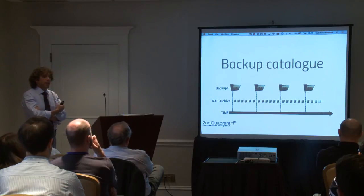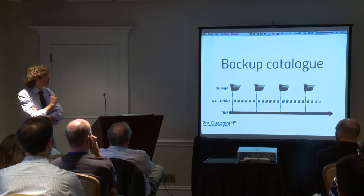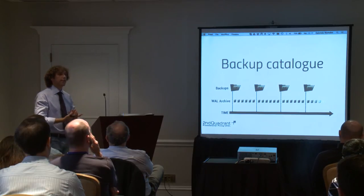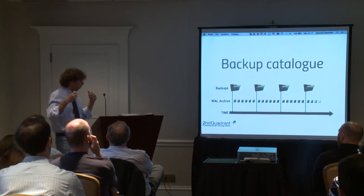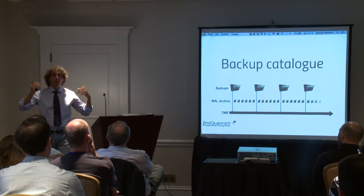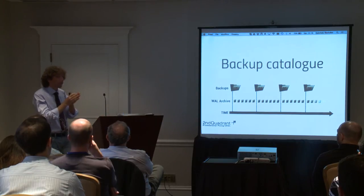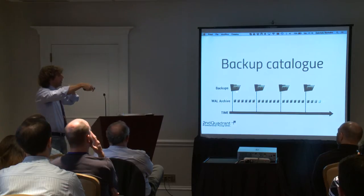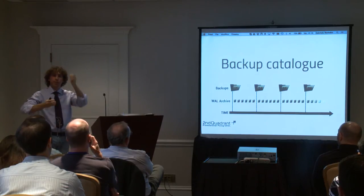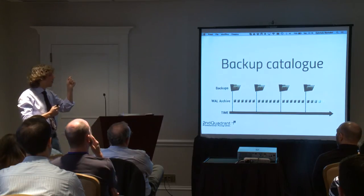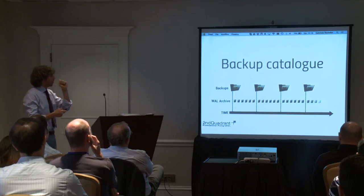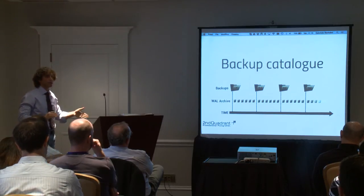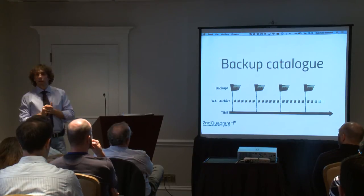The coolest feature of Barman is the backup catalog. With the backup catalog, let's say you take a weekly backup every Saturday — over time you generate weeks and months of data, so you can restore at any point in time within this range. Barman keeps separated backups, which are like milestones, and separates them from the WAL archive, which is a continuous stream of WAL files from the first available backup to the latest one that's just been shipped.